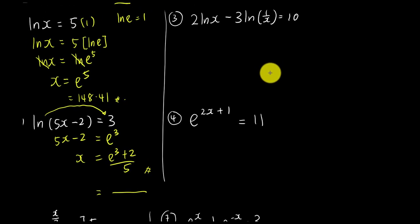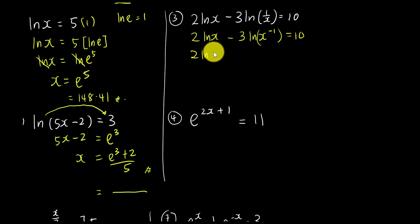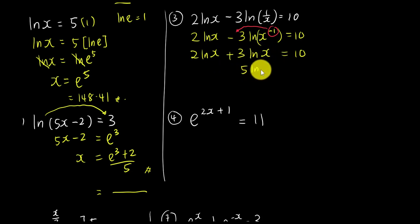For question three, it's slightly more complicated but manageable if you know log rules. We have 2·ln(x) + ln(1/x). Note that 1/x = x^(−1), and by the log power rule, the −1 moves to the front, giving −ln(x). Also x here equals 10 — wait, the equation equals 10. So 2·ln(x) + (−1)·ln(x) but recheck: 2ln(x) − (−3)ln(x). Combining like terms: 2ln(x) + 3ln(x) = 5ln(x) = 10, so ln(x) = 2, giving x = e².